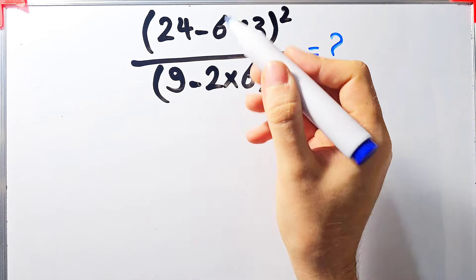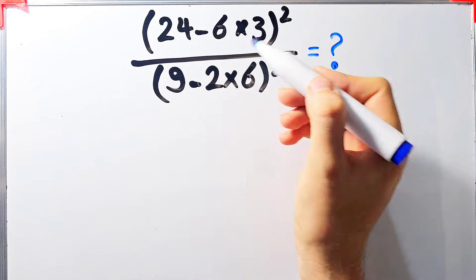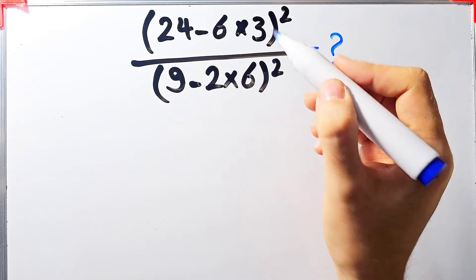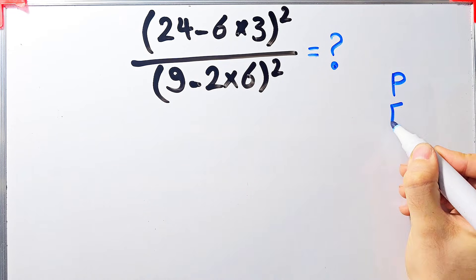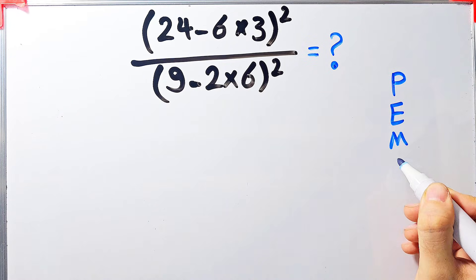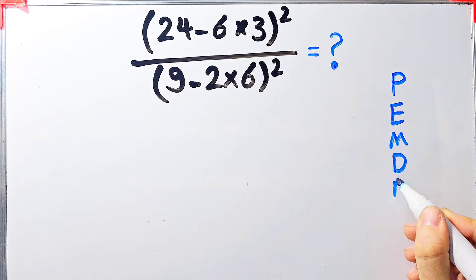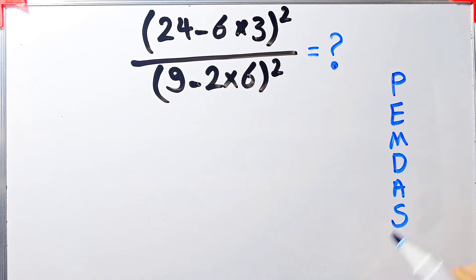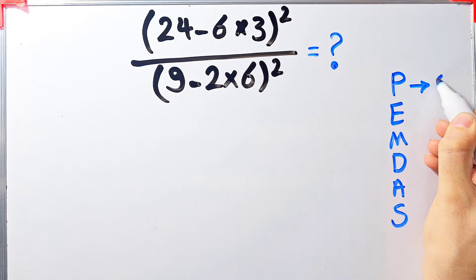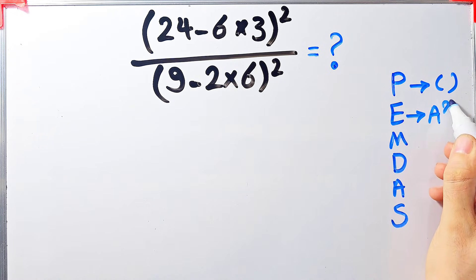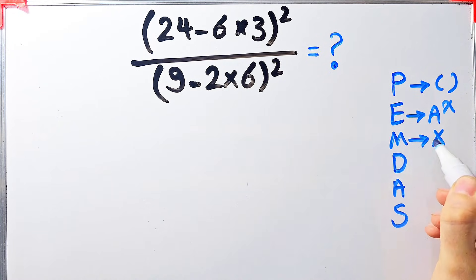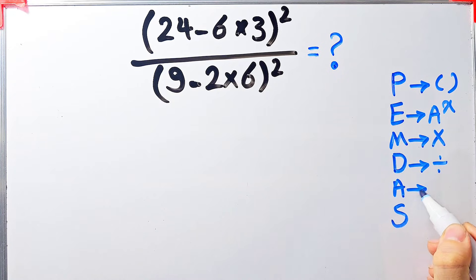In this question we have parenthesis, subtraction, multiplication, exponent, and division. To solve this question we need to follow the order of operations, which is PEMDAS. PEMDAS shows the priority of the mathematical operations, and if you don't pay attention to this rule you get the wrong answer. P stands for parenthesis, E for exponent, M for multiplication, D for division, A for addition, and S for subtraction.